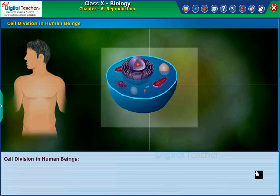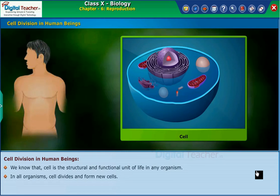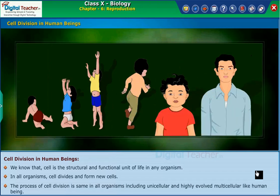Cell division in human beings. We know that the cell is the structural and functional unit of life in any organism. In all organisms, cells divide and form new cells. The process of cell division is the same in all organisms, including unicellular and highly evolved multicellular organisms like human beings.